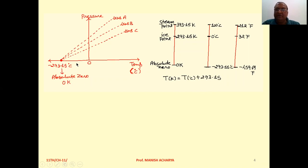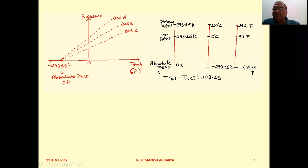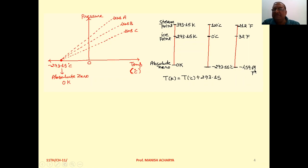There are three important reference points for temperature scales: absolute zero, the ice point, and the steam point. Absolute zero is 0 K, minus 273.15°C, and minus 459.69°F. The ice point is 273.15 K, 0°C, and 32°F.